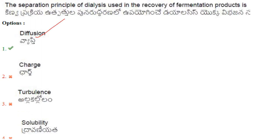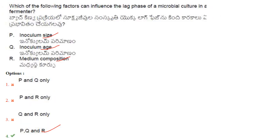The separation principle of dialysis used in the recovery of fermentation products is diffusion — answer is option 1. Which factors can influence the lag phase of a microbial culture in a fermenter? The lag phase is the starting phase, and it can be influenced by inoculum size, inoculum age, and media composition. The answer is option 4: P, Q, and R.